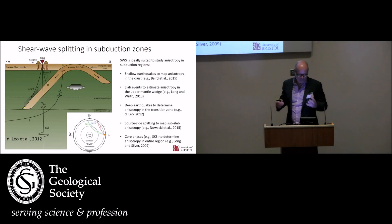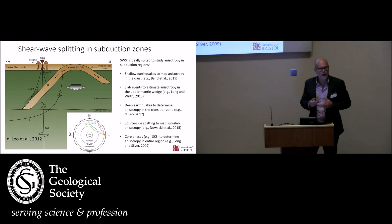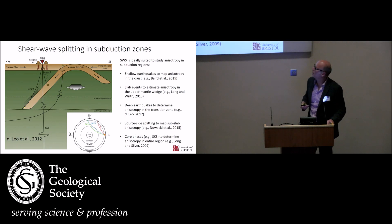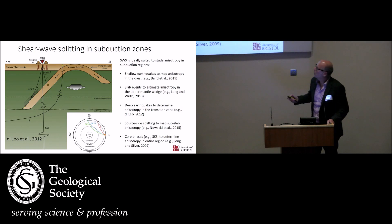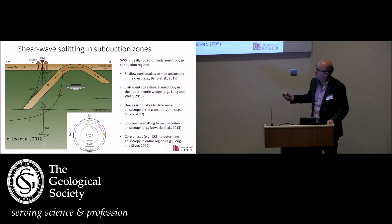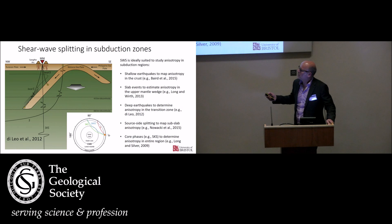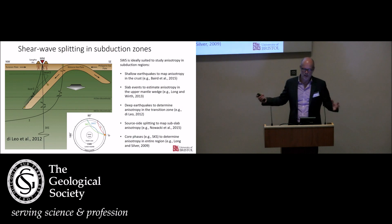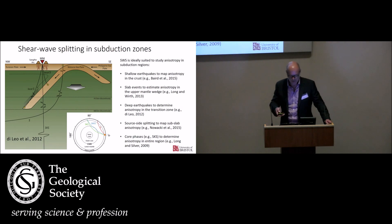Using shear wave splitting at subduction zones is ideally suited because we have different seismic phases available. We can look at crustal earthquakes to understand the stress state in the overriding crust, slab events to image finite strain in the upper mantle wedge, deeper events to probe the transition zone, source-side splitting using teleseismic slab events to probe the slab and below, and core phases like SKS which image anisotropy across the entire region. The forefront right now is combining all these phases into shear wave splitting tomography.